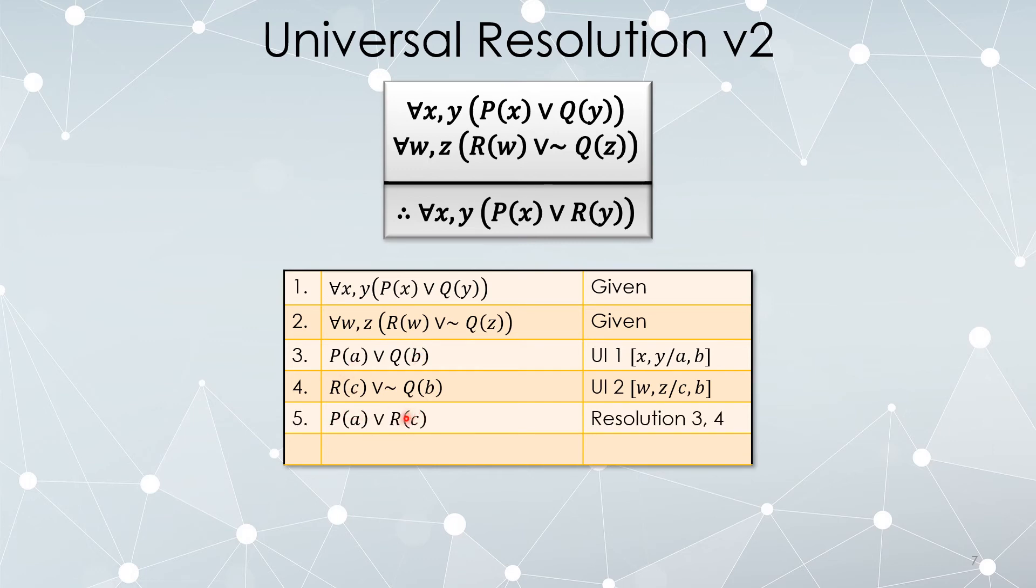And now we can universally generalize both of those variables. Because both of the variables A and C never occurred as a given, as a free variable, and were only introduced through universal instantiation, they can both be universally generalized to whatever variable we want. And because our conclusion of our rule of inference involved X and Y here, that's what we do.